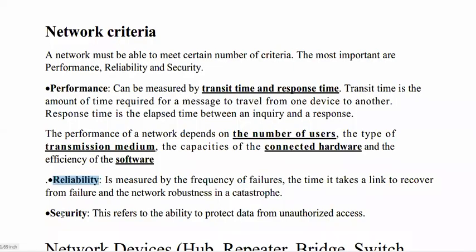The third important factor is security. Network security is important because unauthorized access means someone accesses, modifies, or uses programs on a computer system without permission.